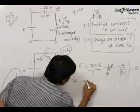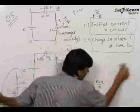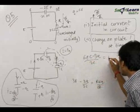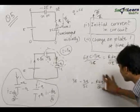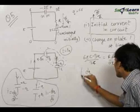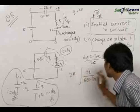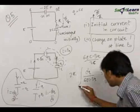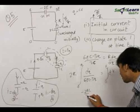Substituting i equals dq/dt into the equation, we get a differential equation in q. On solving, we get: 3E minus 3q/(2C) equals R times dq/dt. Rearranging: (6EC minus 3q)/(2C) equals R times dq/dt. This can be easily solved by writing dq/(6EC minus 3q) equals dt/(2RC), and integrating with t from 0 to t and q from 0 to q, since the initial charge on this plate was zero.